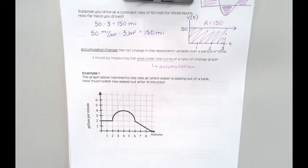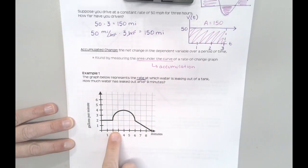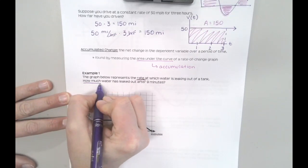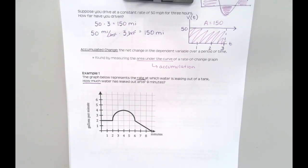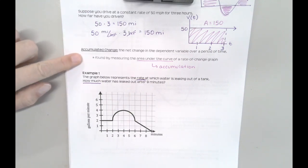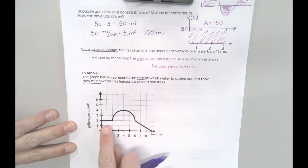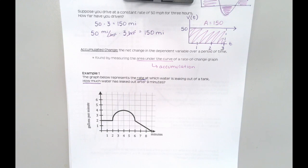Let's take a look at this first example. The graph below represents the rate at which water is leaking out of a tank — important to recognize that this represents a rate, so essentially what you're looking at here is a derivative graph. I'm asking you how much, so I want you to go from rate of change backwards. I want to know: if you have a rate of change, how much actual water has leaked out after nine minutes? Remember — accumulation is measured by finding the area under the graph.